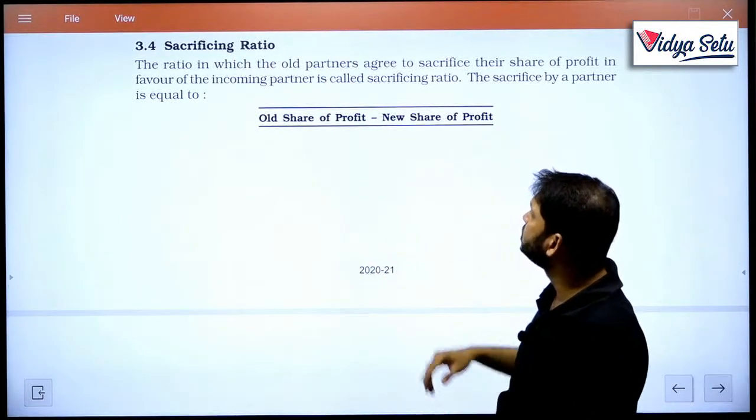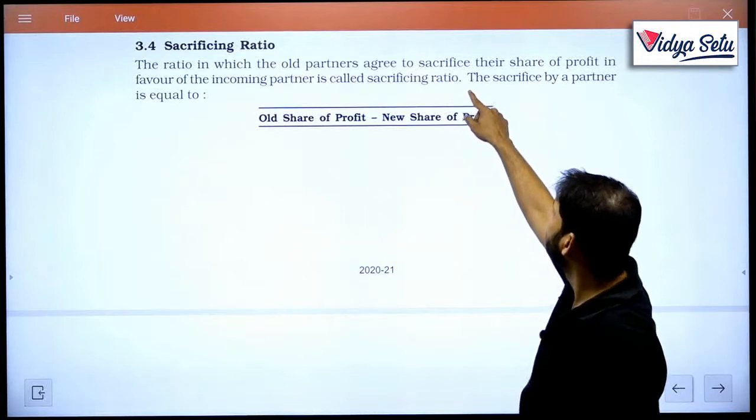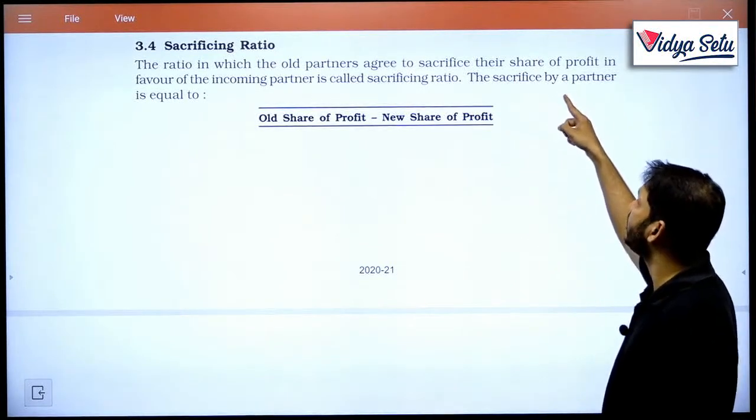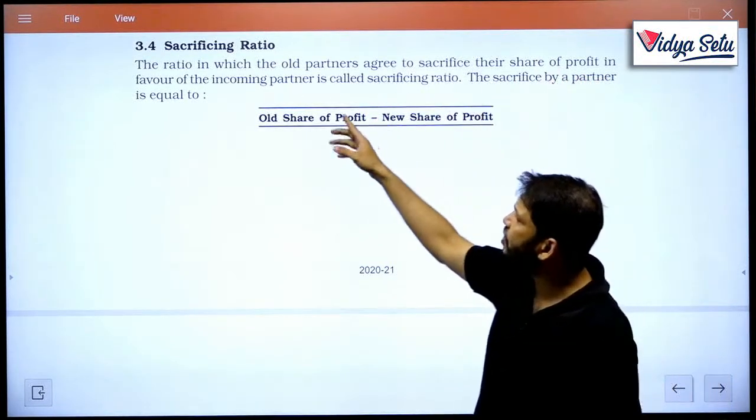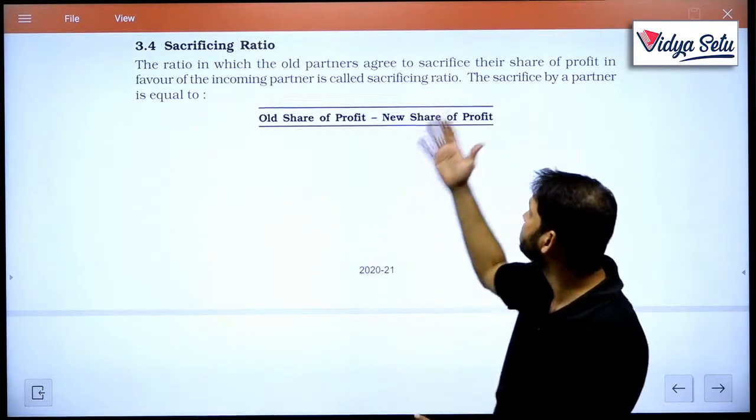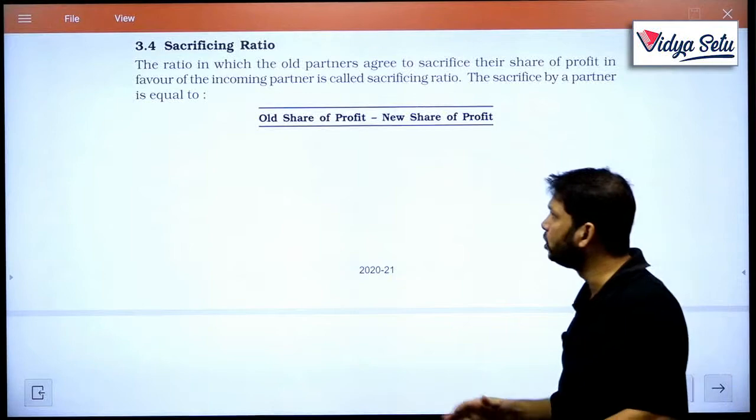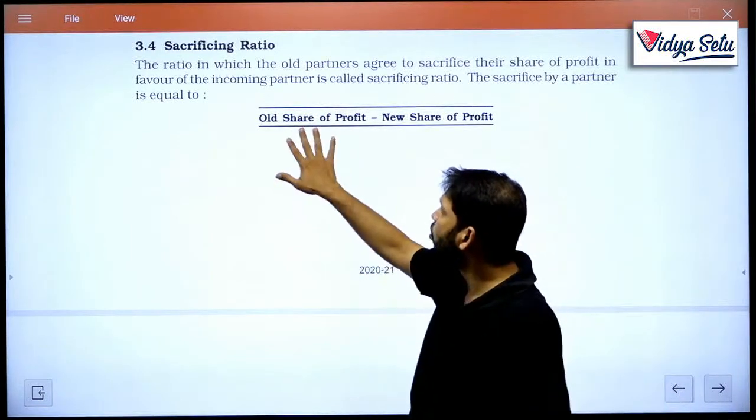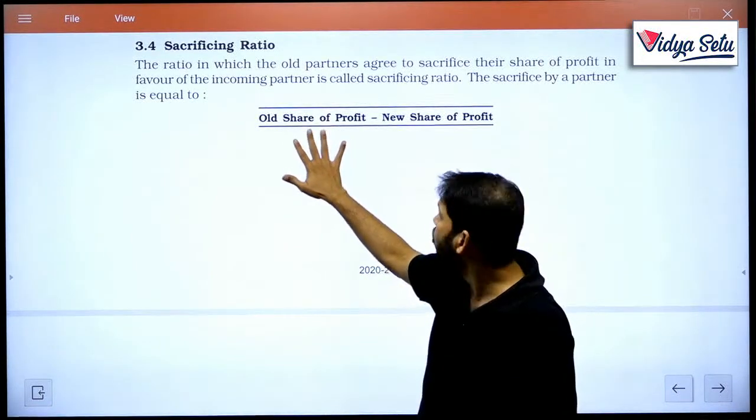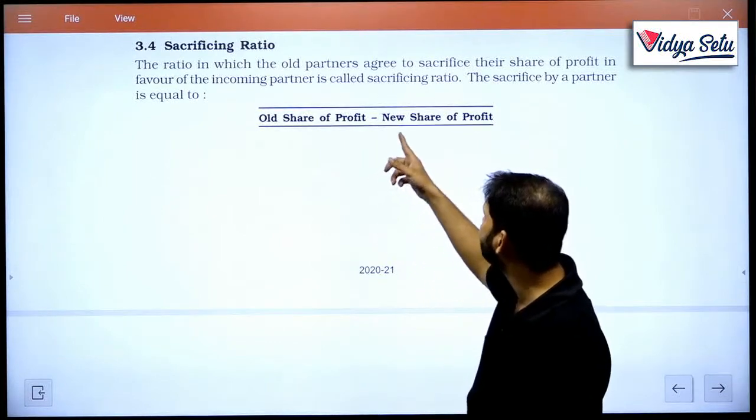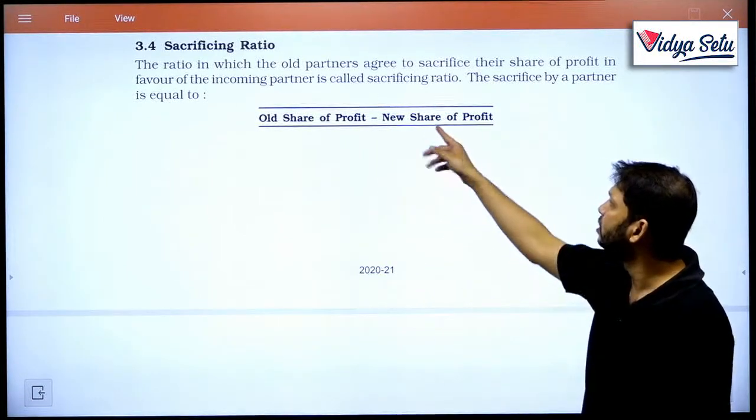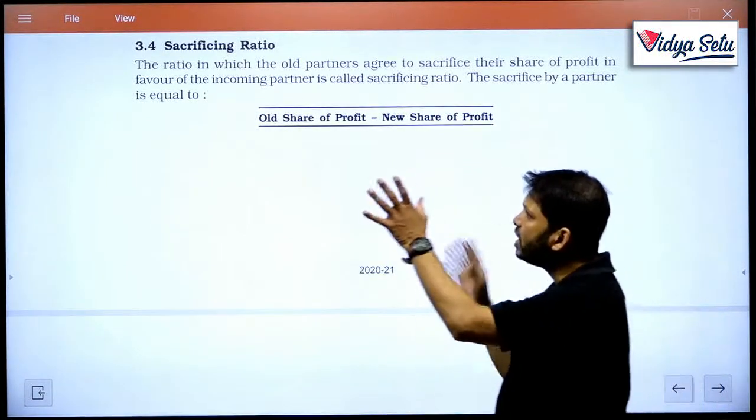So what is sacrificing ratio? Let's understand. The ratio in which the old partners agree to sacrifice their share of profit in favor of the incoming partner is called sacrificing ratio. So the sacrifice by the partner is equal to how much they are sacrificing, whatever was their old ratio or share of profit minus now whatever is remaining new shares.